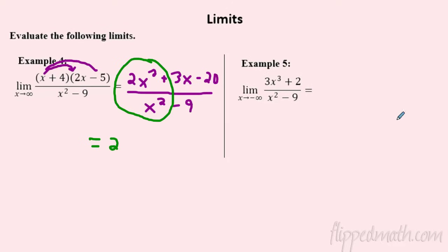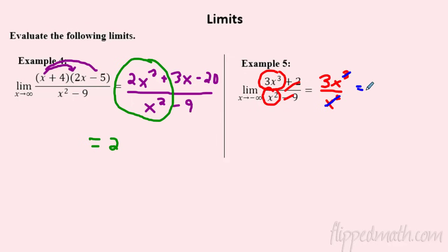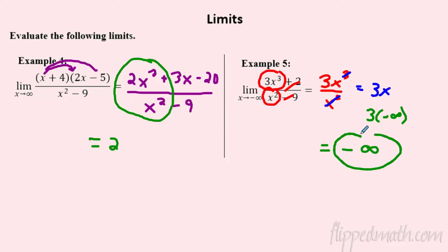Looking at example four: the degrees are the same — 2x squared over x squared. They cancel each other out and the limit as x approaches infinity is just 2. If talking about the horizontal asymptote I'd say y equals 2, but here we're just evaluating the limit — it's 2. Example five: x cubed on top, x squared on bottom. The top dominates. Cancel x squared from x cubed and I'm left with 3x. Plugging in negative infinity: three times negative infinity is just negative infinity. The limit is negative infinity.